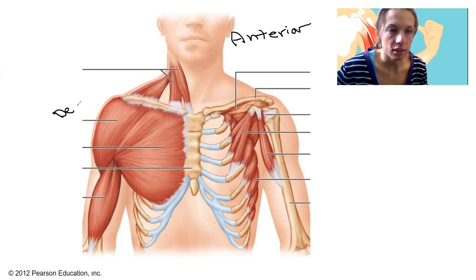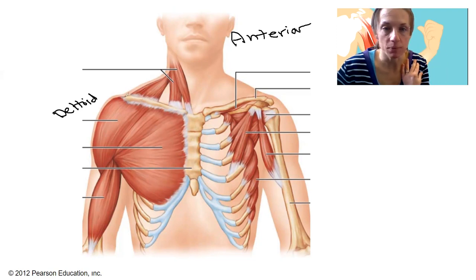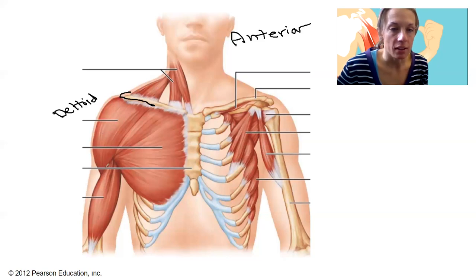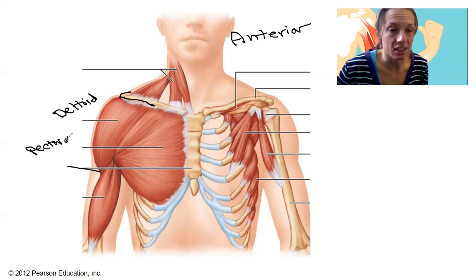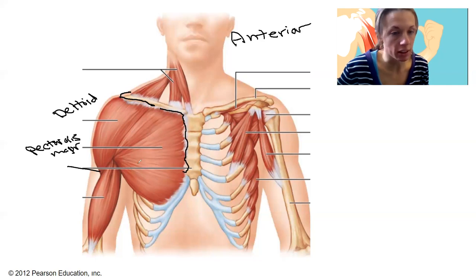This is the deltoid. It's actually seen from a posterior view as well — it wraps around the entire shoulder. Its origin is going to be along the clavicle as well as the scapular spine in back, and the insertion is on the deltoid tuberosity. The pectoralis major is right next to that — this big one right here that originates along the clavicle and sternum.